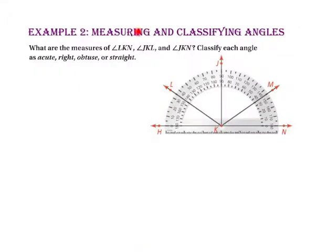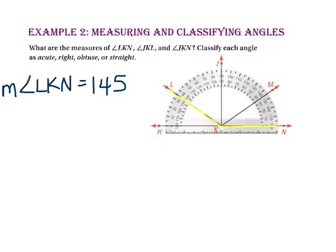Example 2 asks: what are the measures of angle LKN, angle JKL, and angle JKN? Classify each angle as acute, right, obtuse, or straight. Looking at angle LKN, ray KN lines up with 0 on the inside ring of the protractor. Following the inside ring over to where ray KL crosses the protractor at 145, the measure of angle LKN is 145. Since that measure is greater than 90 degrees but less than 180 degrees, that is an obtuse angle.